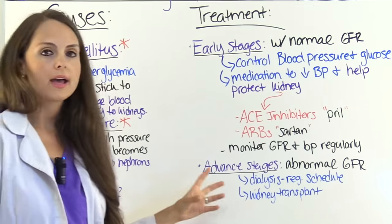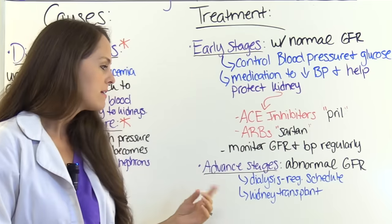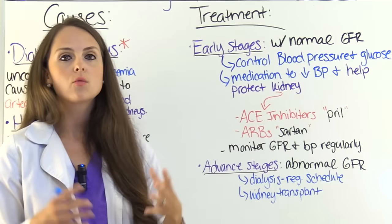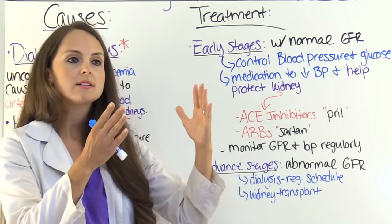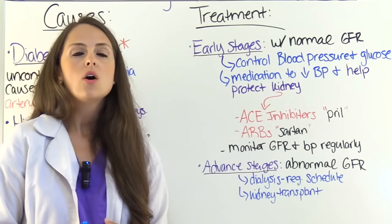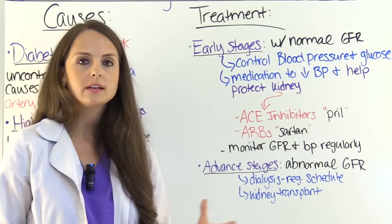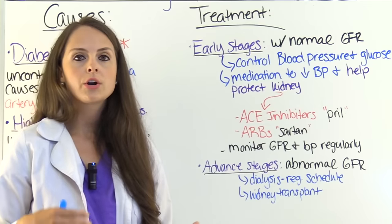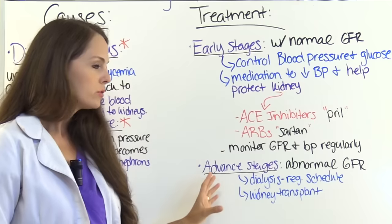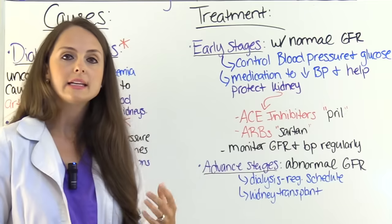In advanced stages — particularly stages 3, 4, and 5 — especially where the GFR is significantly abnormal, the patient may need dialysis on a regular schedule, such as Monday/Wednesday/Friday or Tuesday/Thursday. Dialysis is a machine that filters the blood as the nephron of the kidneys should, removing excessive water, waste, and regulating electrolyte levels. If it's end-stage renal disease and they're a candidate, they can receive a kidney transplant.